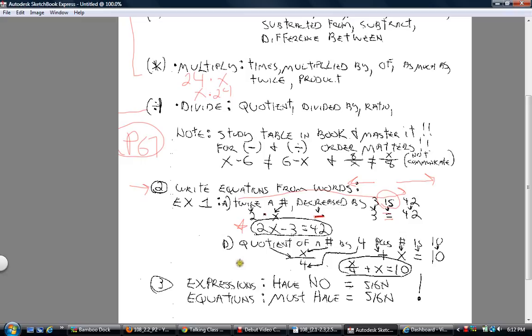Here's another one here. We've got the quotient of a number by 4. The question is, is it x divided by 4 or 4 divided by x? If it said 4 divided by a number, then that would be the right way. But for this problem it's x divided by 4.